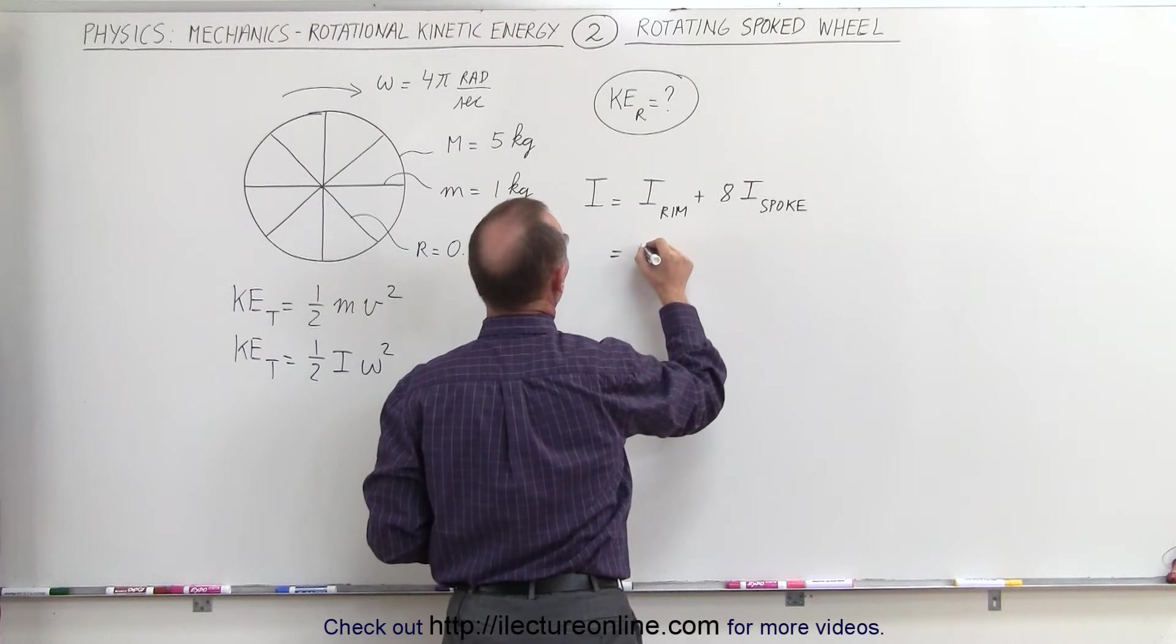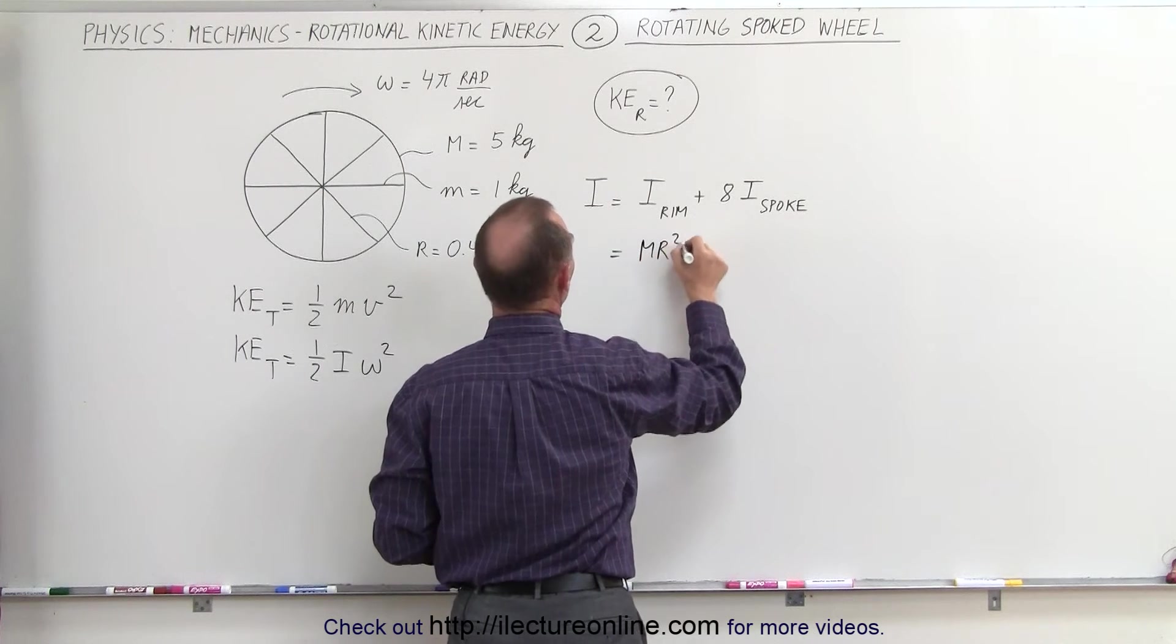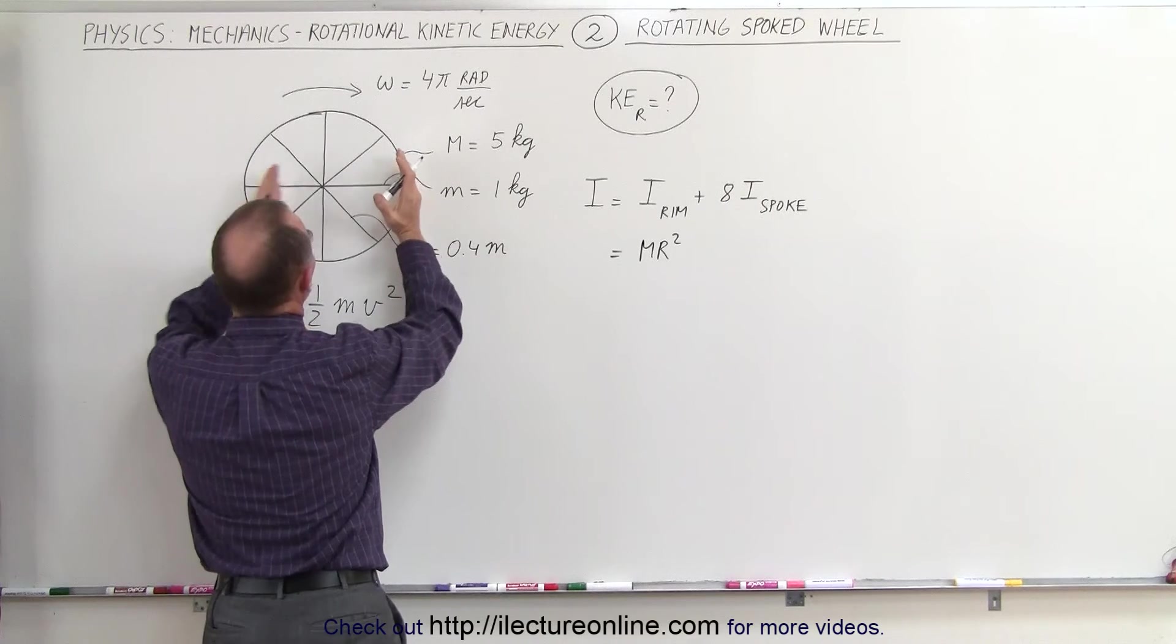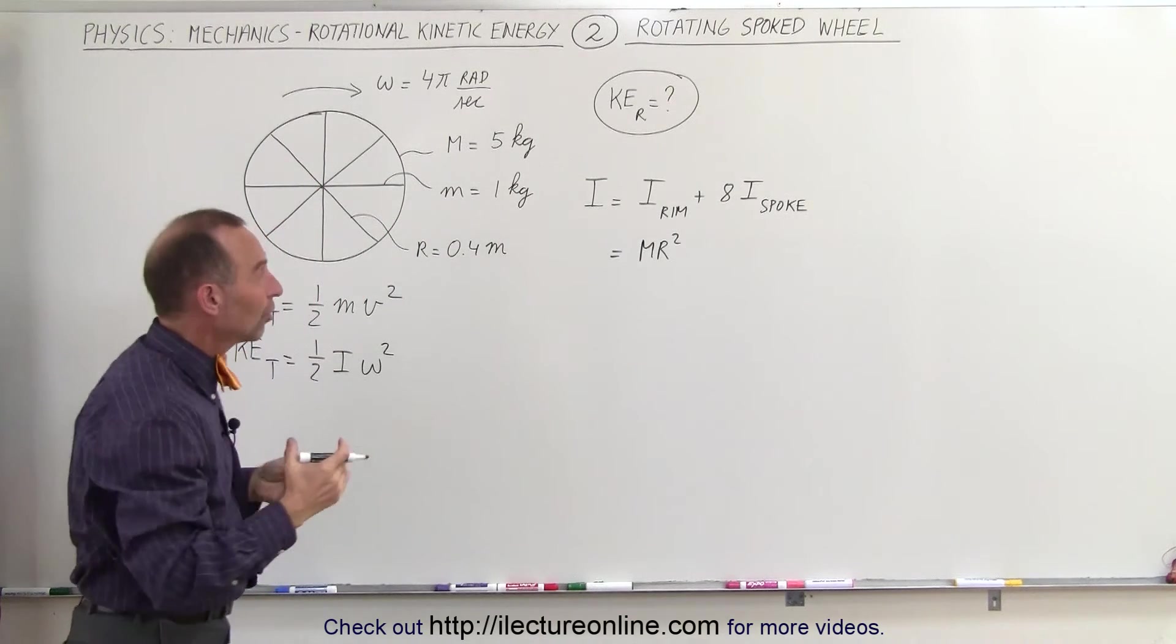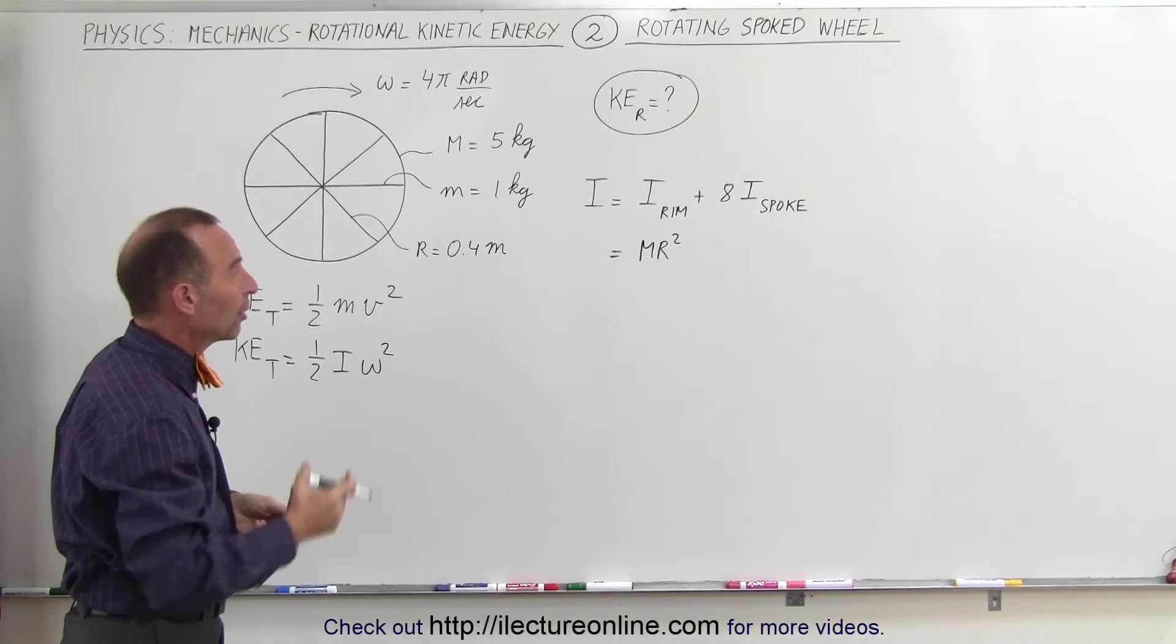That means this is equal to MR², since all of the mass of the rim is a distance r away from the point of rotation. We use the general equation for the moment of inertia, MR²,